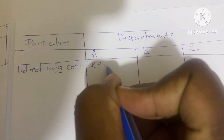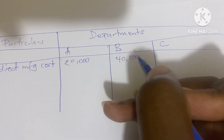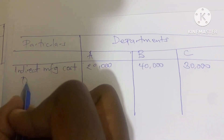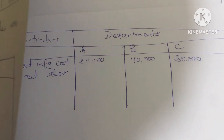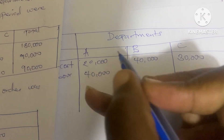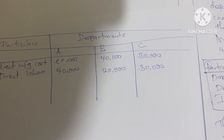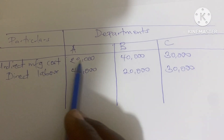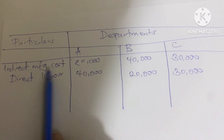The indirect manufacturing costs are: department A is 20,000, department B is 40,000, and department C is 30,000. The direct labor figures are: department A is 40, department B is 20, and department C is 30. We are now supposed to determine the percentage that direct labor contributes to the indirect manufacturing cost.